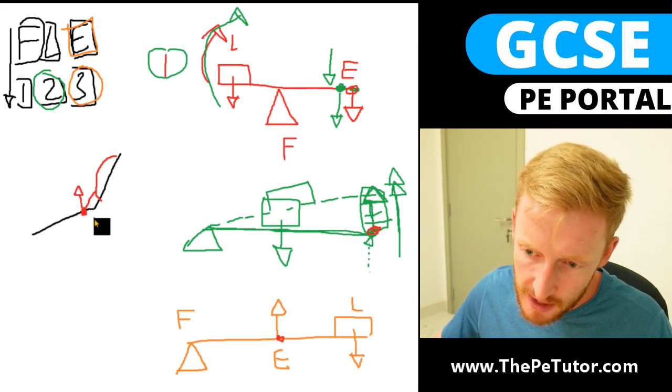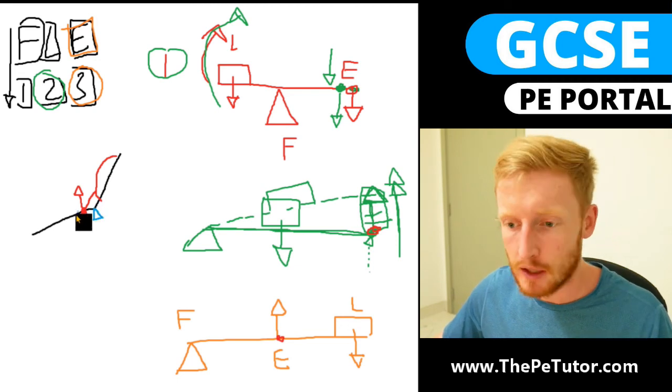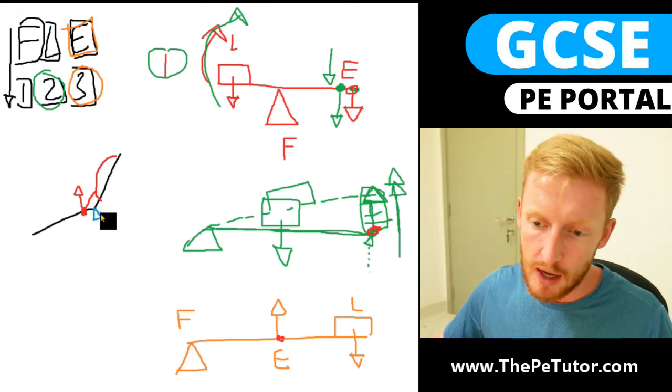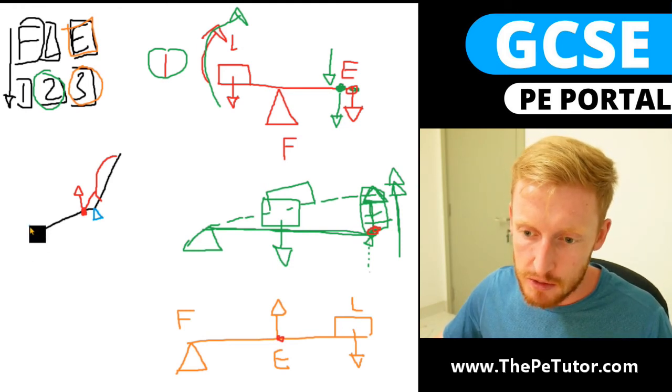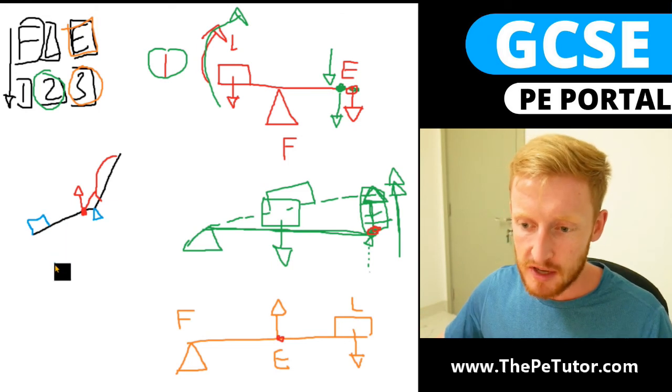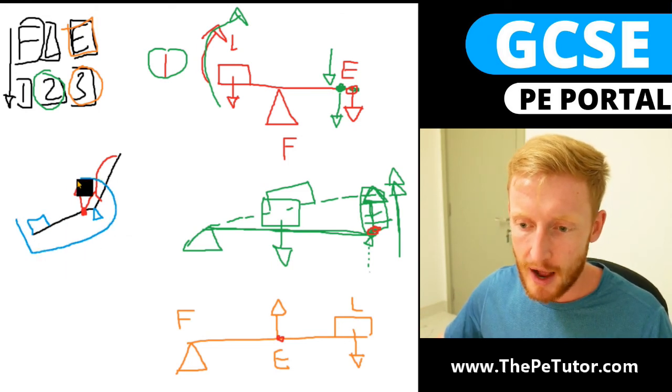Well we know that the elbow joint is here because that is where the radius is going to be pivoting on the end of the humerus, and we know that the racket or the hand or the resistance is going to be at the other end of the bone. So if we were to take a bit of a zoom in on that what would we be looking at?